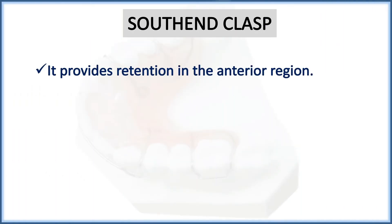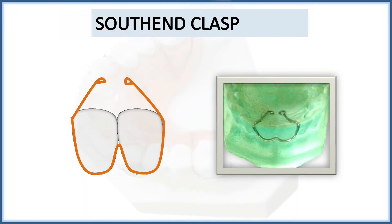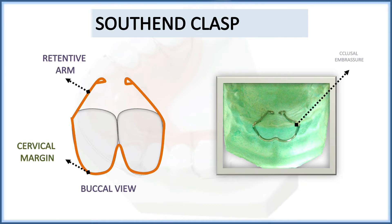This clasp is the South End clasp. It provides retention in the anterior region, meaning it is used only in the anterior region of the jaw. The wire is adapted along the cervical margin of both central incisors. The distal end of the wire crosses over the occlusal embrasures and ends as a retentive arm on the palatal side. The figure shows a buccal view with the cervical margin and retentive arm, and the occlusal view shows how it crosses the occlusal embrasures.